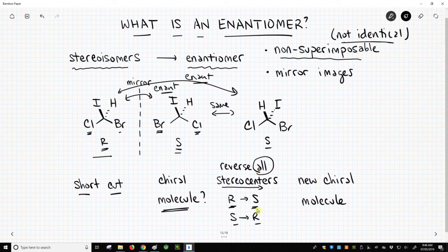Well, we change the R stereocenter to S and any S stereocenter to R, and how do we do that? We simply swap two groups on that stereocenter, and that will reverse or invert the stereocenter, and that will give us a new chiral molecule. What will be the relationship between these two chiral molecules? Well, they're going to be stereoisomers. Specifically, they will be enantiomers.